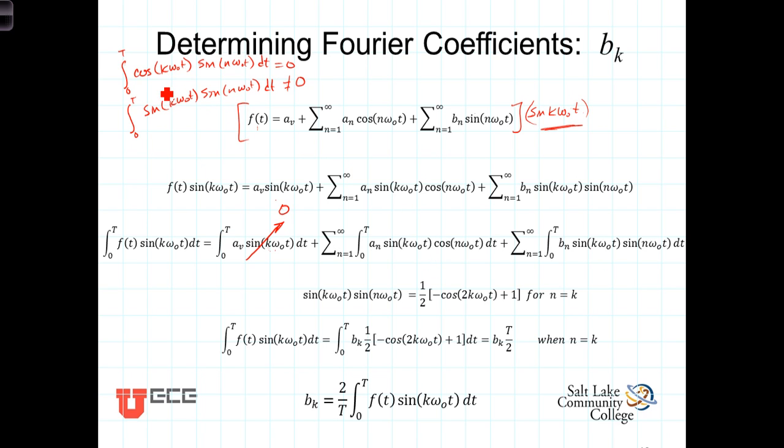Similarly, as we pointed out up here, the cosine of k omega-0 t times the sine of omega-0 t, when you integrate this over the period, it also has no contribution, or that integral equals 0.